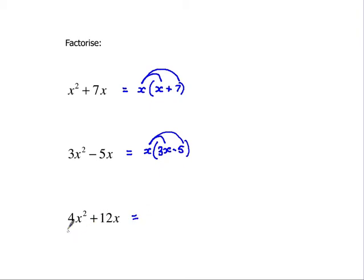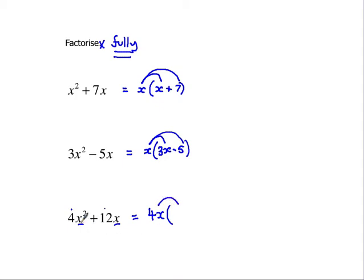The next one's a little bit trickier, because there are two things we can take outside the brackets: there's 4, which goes into 4 and 12, and there's an x in both of these. So I'm going to take both outside the brackets — 4x goes outside the bracket, which I need to do to factorise it fully. 4x times x gives me 4x squared, and 4x times something gives me 12x — 4 into 12 is 3 — so that's positive 3, because 4x times 3 is 12x.